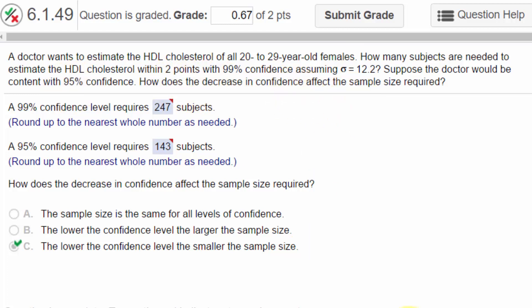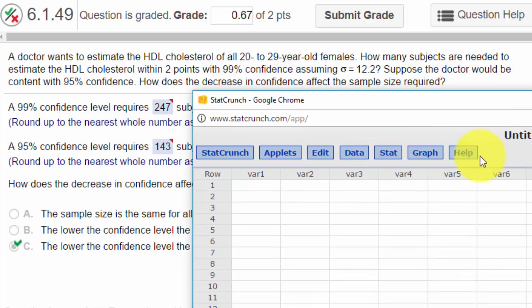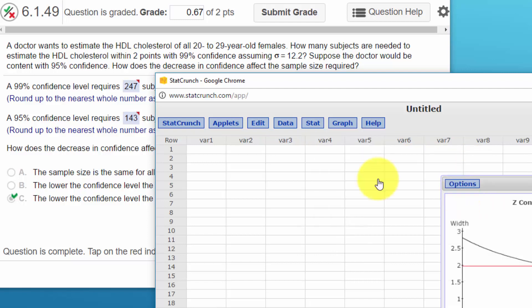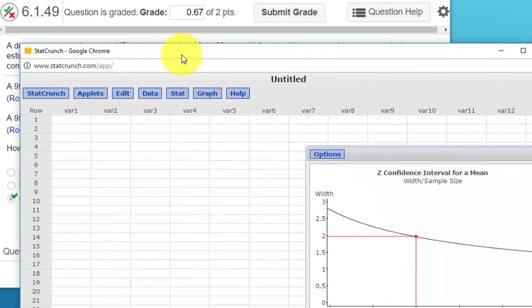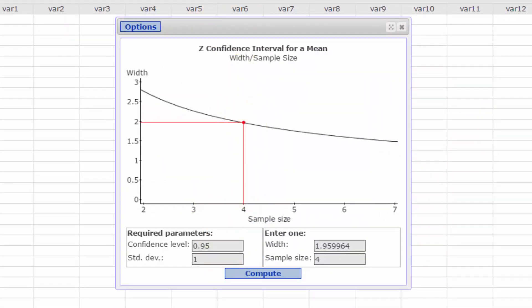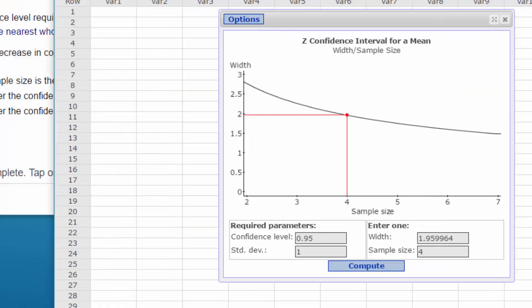So I'm going to bring up StatCrunch, and we're going to go to Stat, and we're going to go to ZStats, because we know the standard deviation of the population sigma. This is one sample, and we're going to go with sample size. And the reason I picked that particular calculator, I'll show you, we're given the half width, two points, plus or minus two points, that means the whole width is four points. So that tells me I want the width calculator, although you can get the same answer using the power calculator.